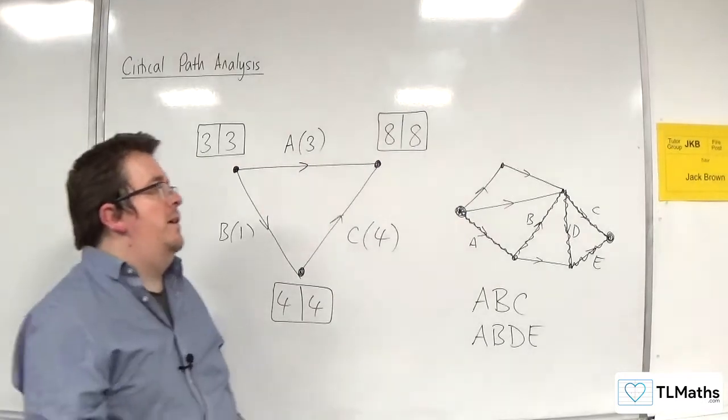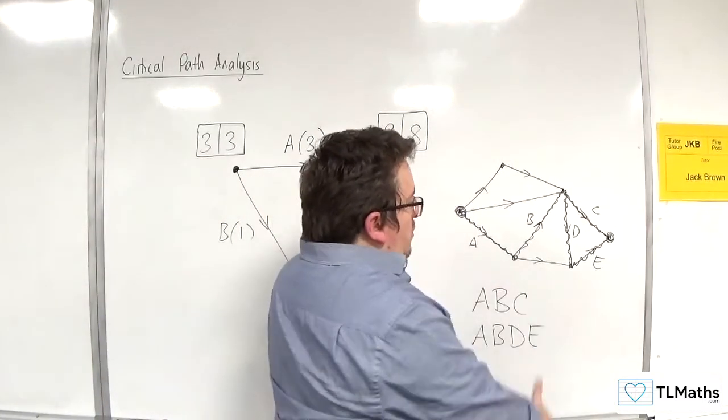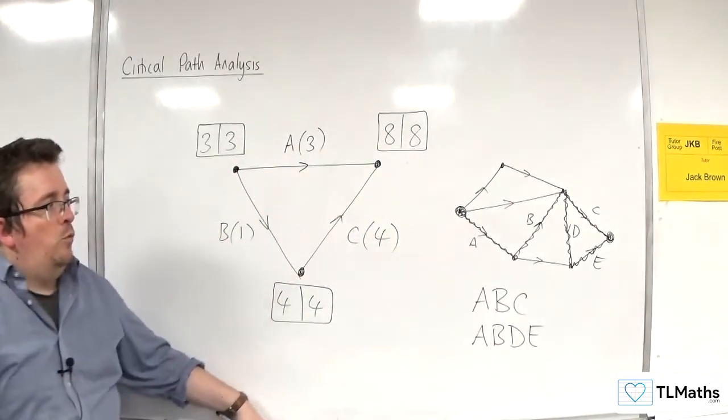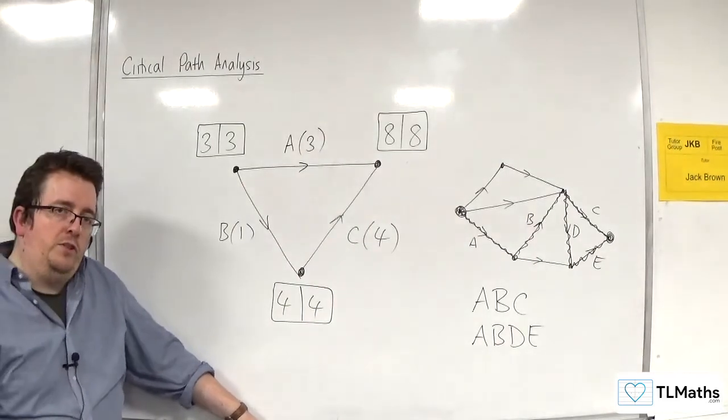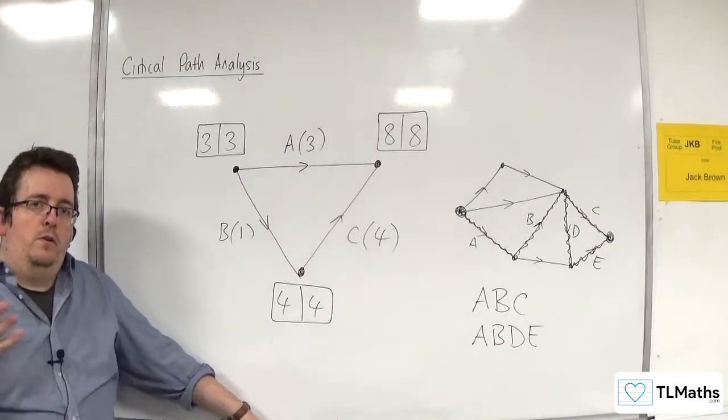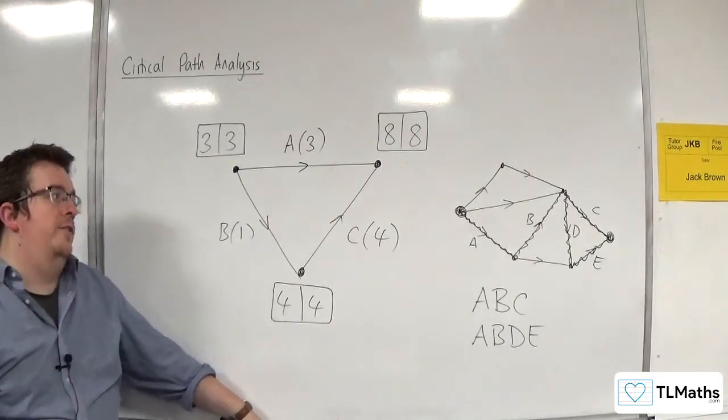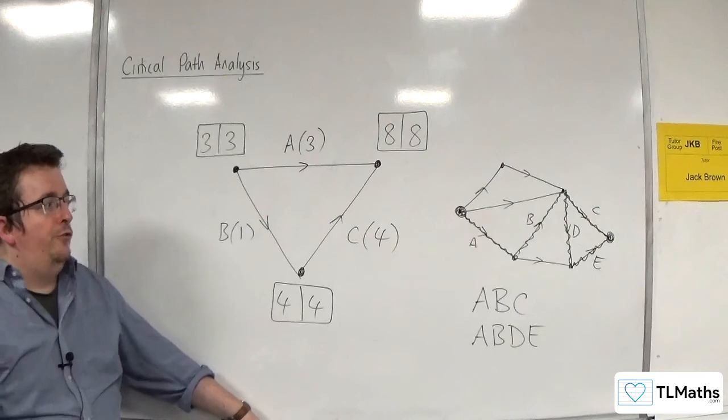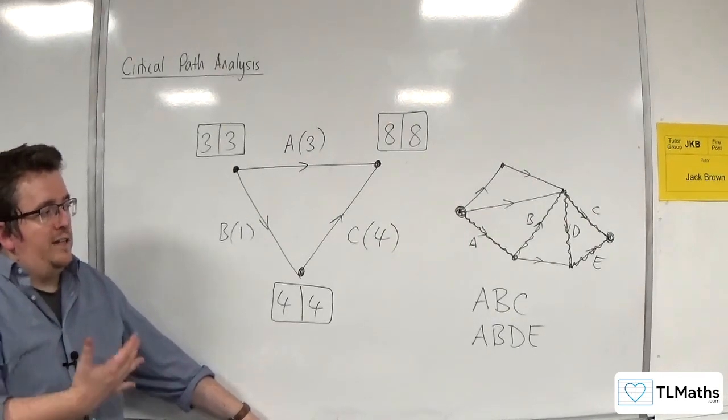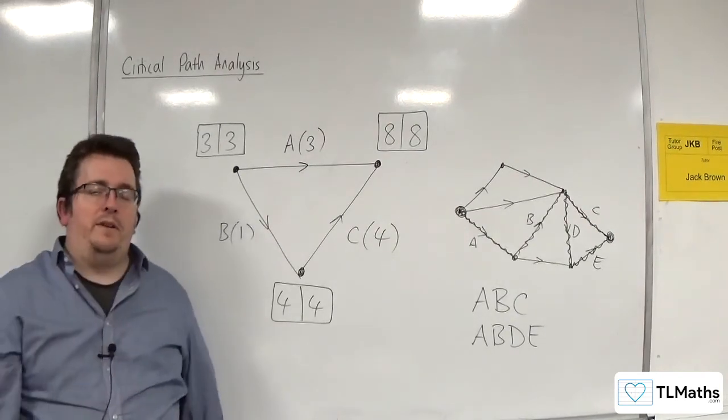So it is perfectly valid that you could have more than one critical path. There will always be a critical path through the activity network that you deal with. So it's important to look out for that. And you may be asked to find the critical path as part of the examined question.